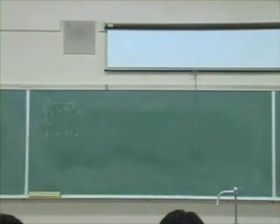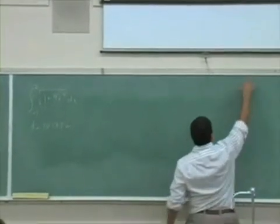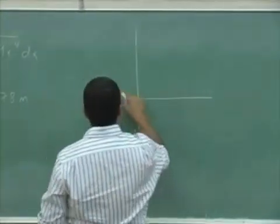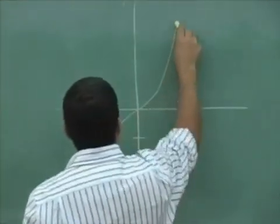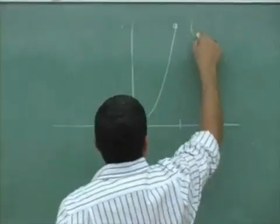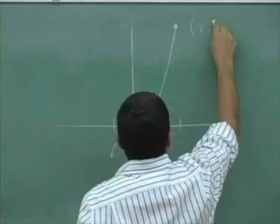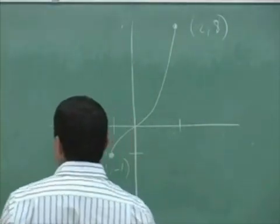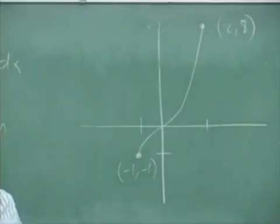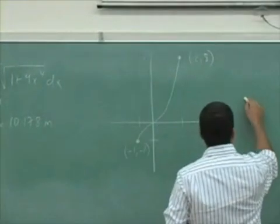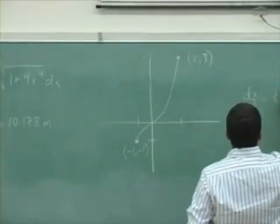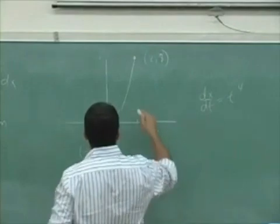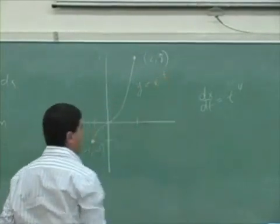So let's continue the rest of the problem. The drawing was like this, and then the point was at negative one, negative one. And the rate at which x was changing as a function of time was t to the fourth. The other thing that we knew is the equation of the line: y equals x cubed.